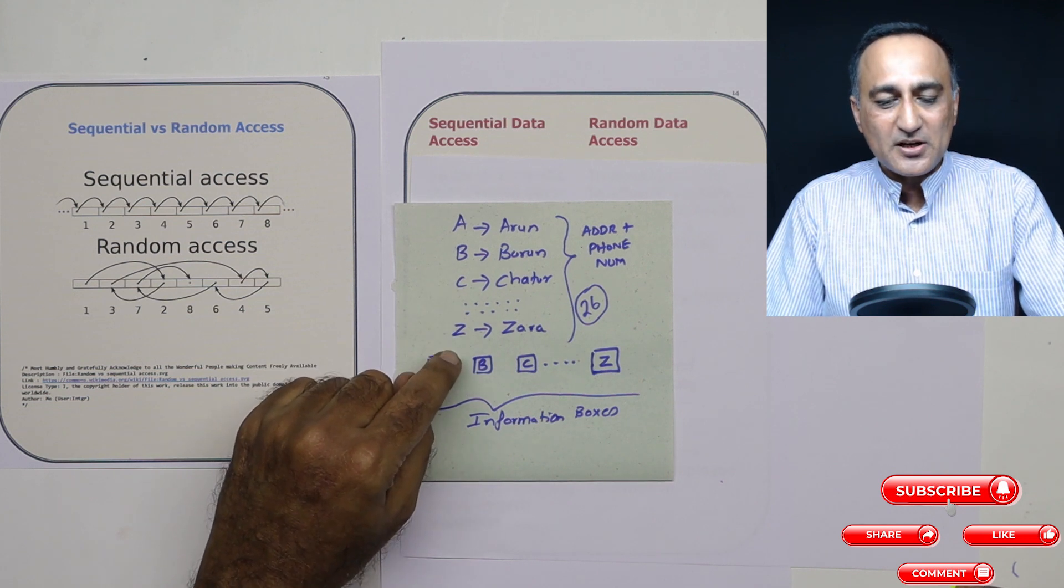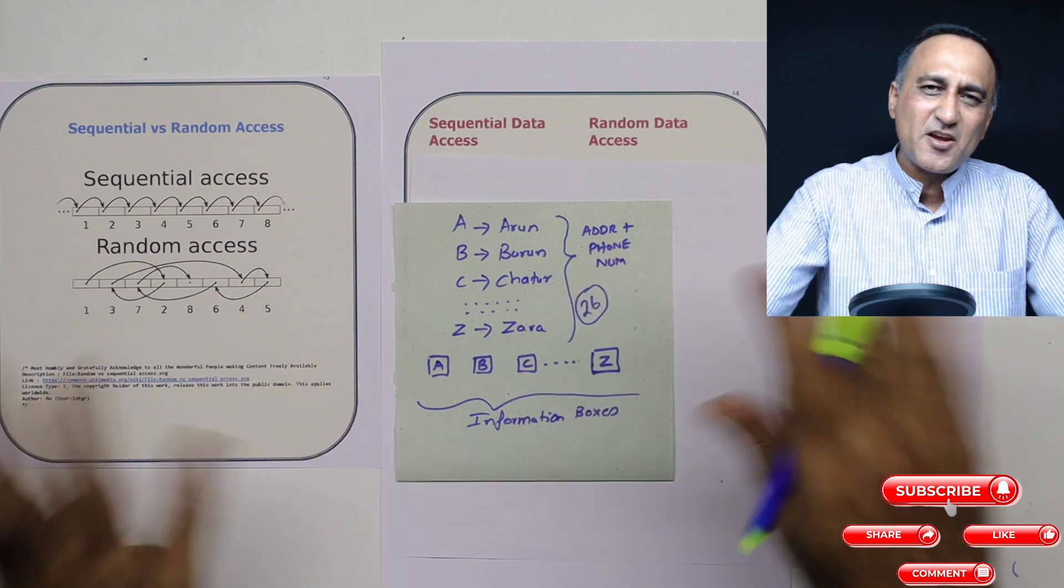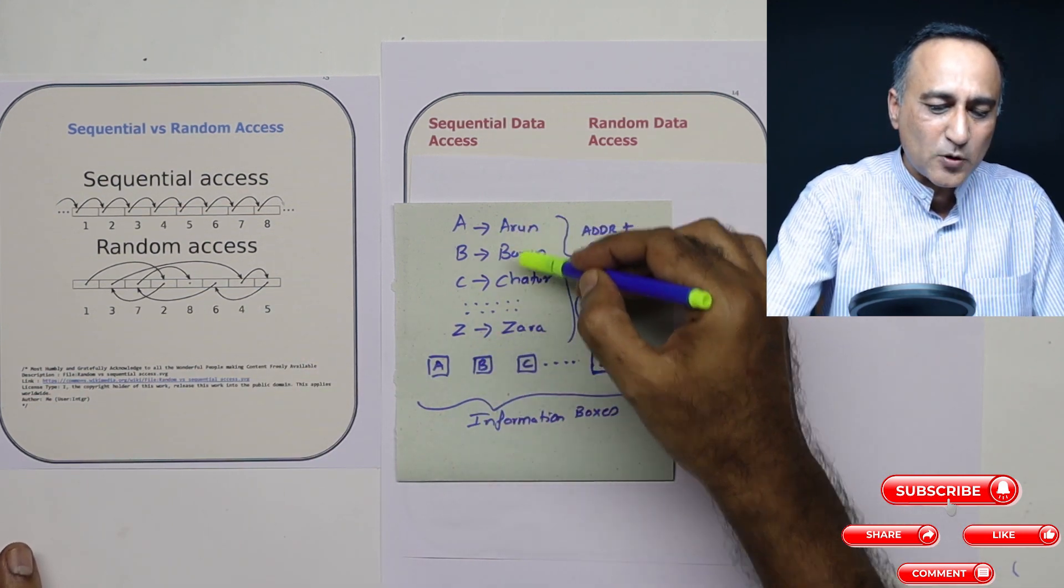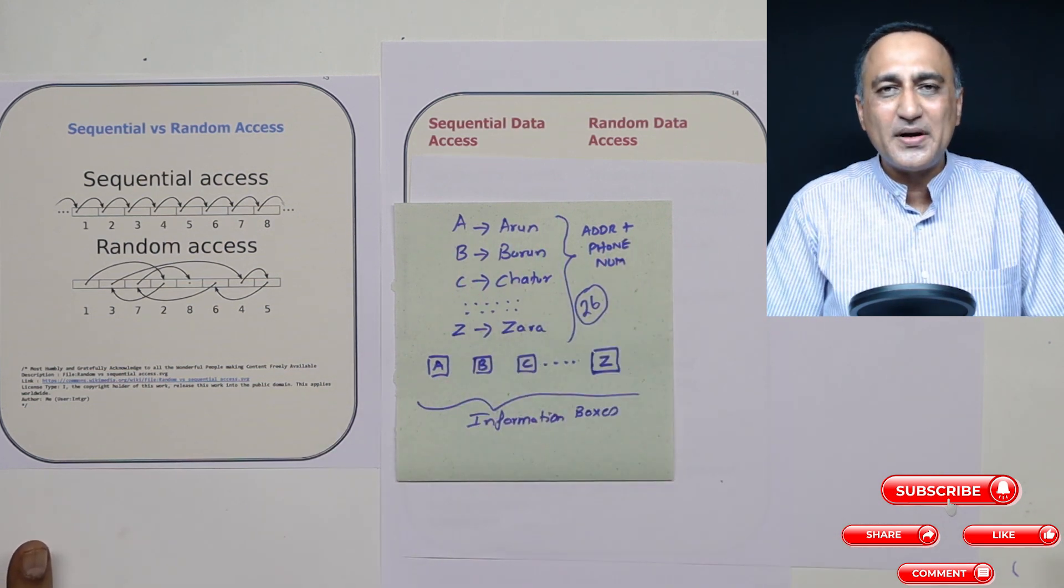So what he does is instead of keeping A in Arun, for example, maybe he kept B here, instead of keeping Chatur in C, he may have kept it in Z. So he just keeps it any how he likes. He doesn't keep it A as Arun, B as Barun, C as Chatur. He just mixes them and puts them in the different 26 boxes.